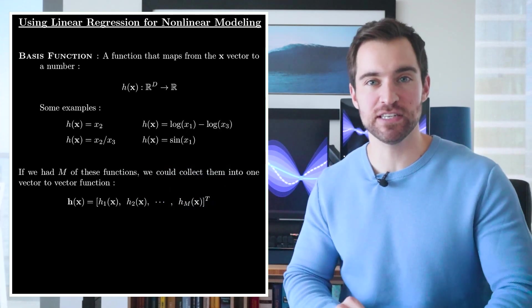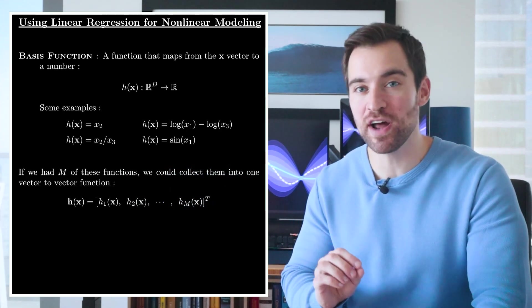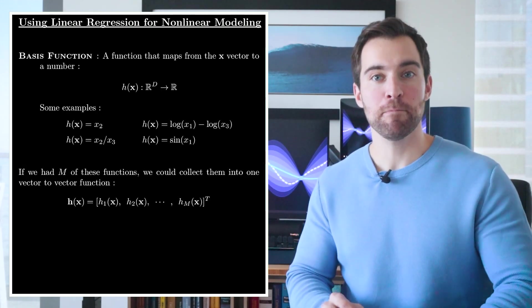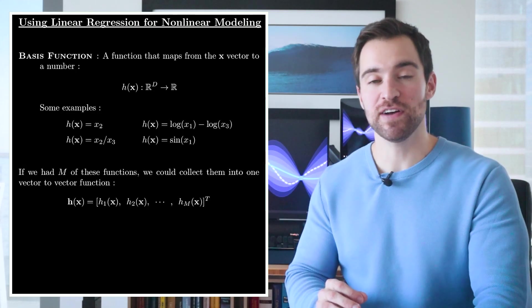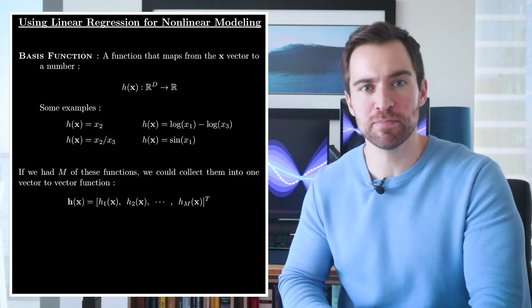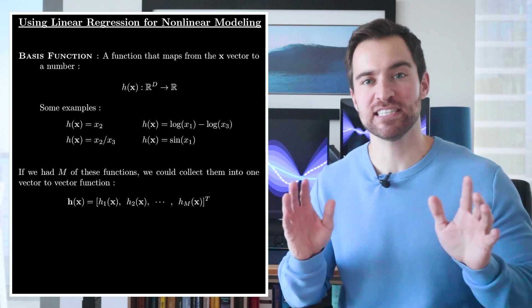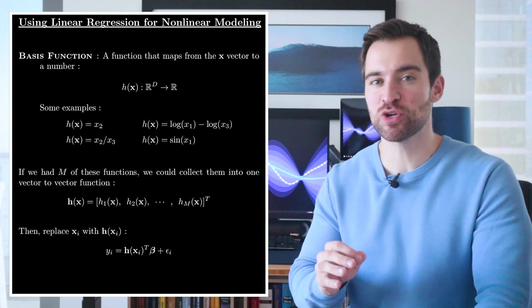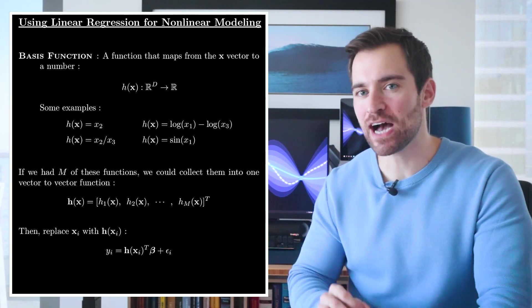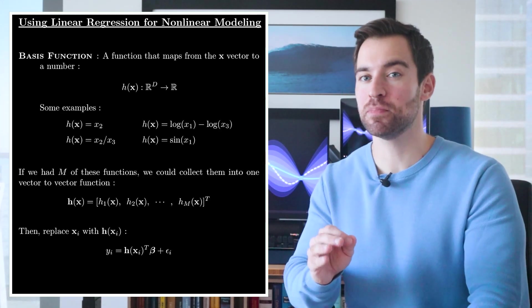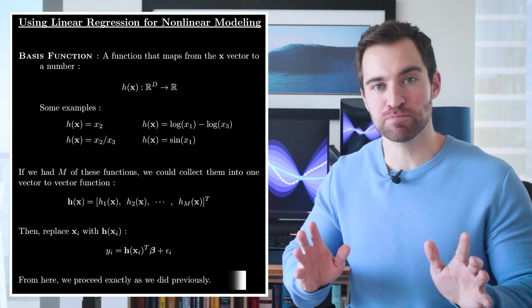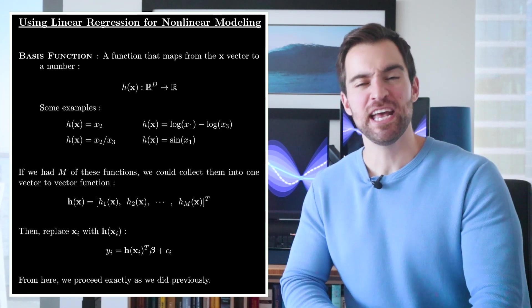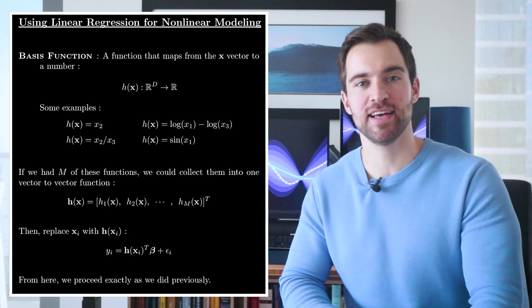Now, let's say we had m of these functions. Well, then we could collect them all into one vector-to-vector function, which I'll represent here with a bold-faced h. This thing maps from a vector of length d to a vector of length m. In general, since m is typically bigger than d, this is called a basis expansion. From here, it's easy. We just substitute h of x for x into our linearity assumption. That is, y is a dot product of h of x with a coefficient vector plus some noise. And then, we just proceed as we did earlier. The idea here is you can get nonlinear effects from a linear model if you pass your data through something nonlinear before you feed it into that linear model.